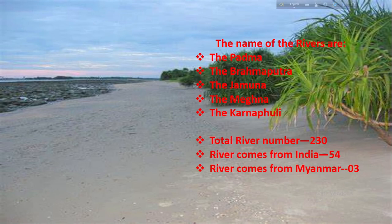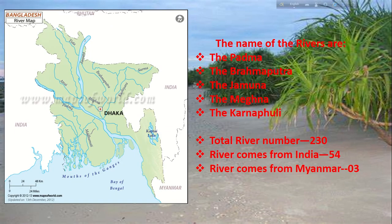Our soil is very rich. Now, the major rivers of Bangladesh — here is the river map showing the Padma, Brahmaputra, Jamuna, Meghna and Karnafuli. In total, 230 rivers flow through Bangladesh. Most rivers come from India — 54 rivers originated in India — and three rivers come from Myanmar. The soil of this country has been formed with the silt from these rivers. We have three major rivers: Padma, Meghna and Jamuna. Jamuna is the main branch of the Brahmaputra river.